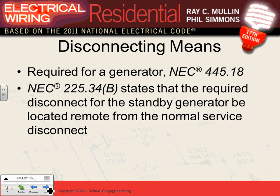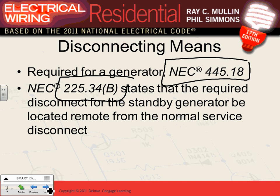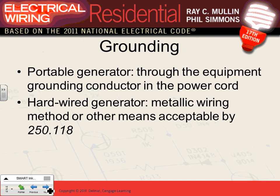Every generator must have a disconnect that can be located remotely from the main panel — typically placed right next to the generator itself. This is required by code to isolate the generator. The generator must also be grounded exactly like any other electrical system — the grounding conductor ties the generator grounding system and the utility grounding system together, either through conduit or a dedicated grounding conductor.